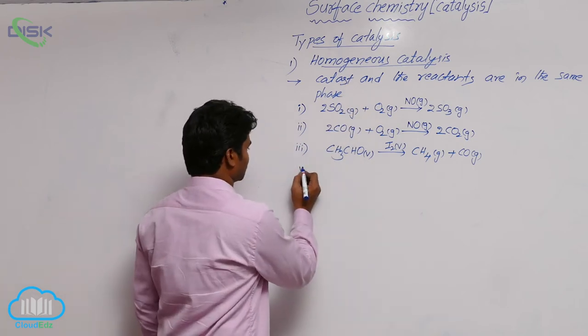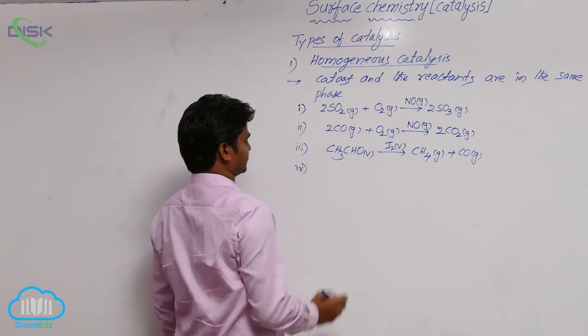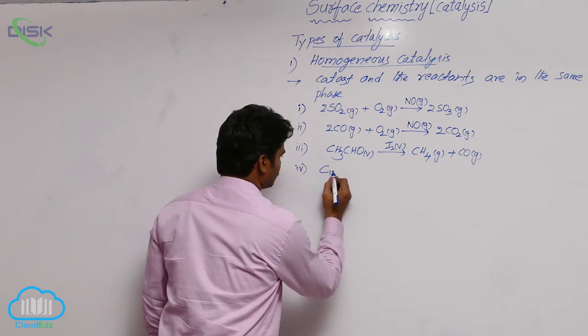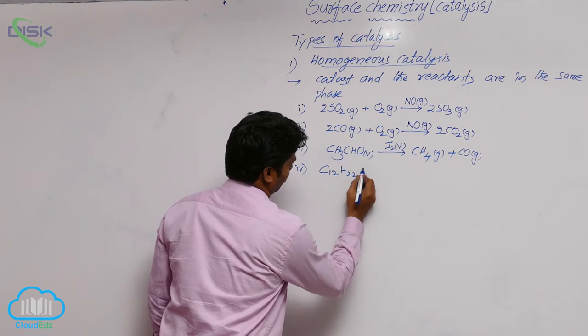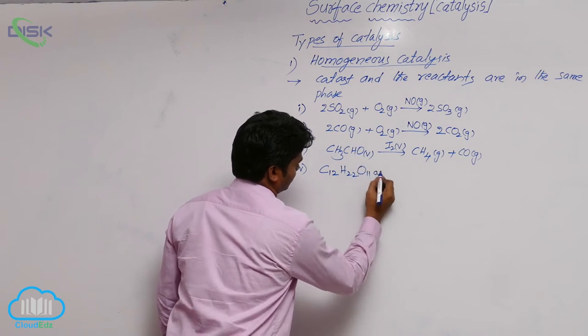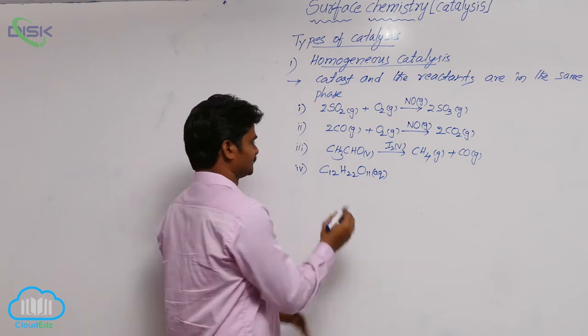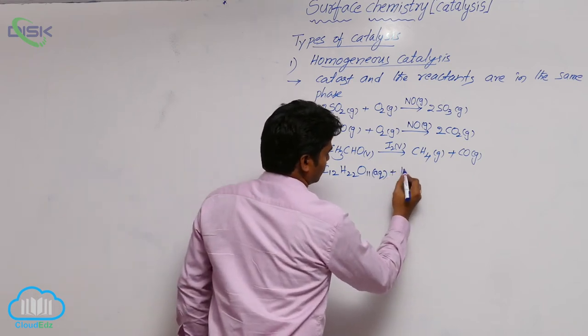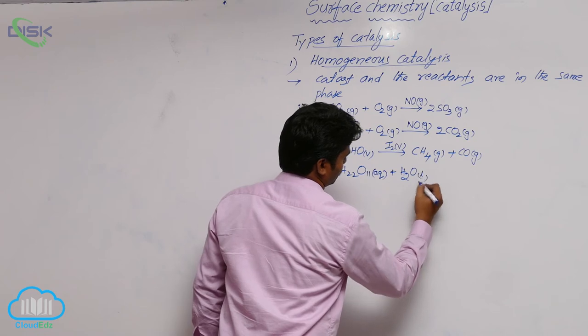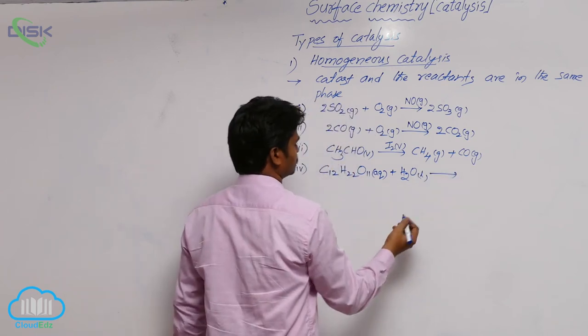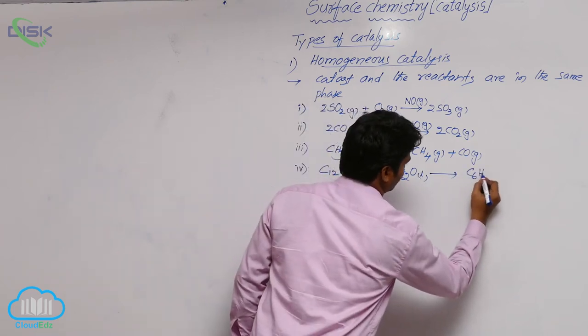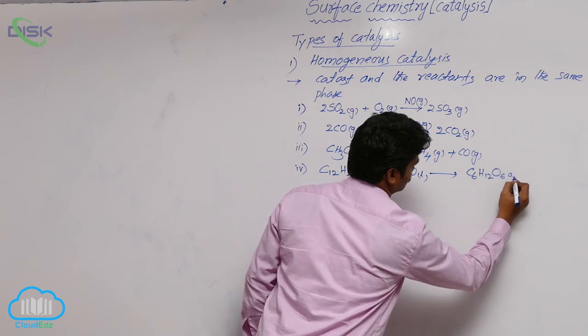Let us see some liquid phase catalysis reactions. C12H22O11, aqua, it is sucrose, plus H2O liquid gives rise to C6H12O6. In this, one is glucose.